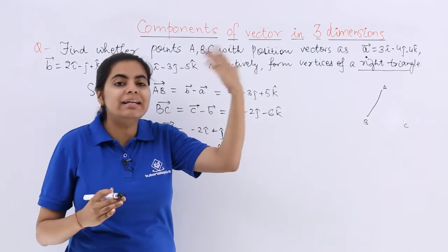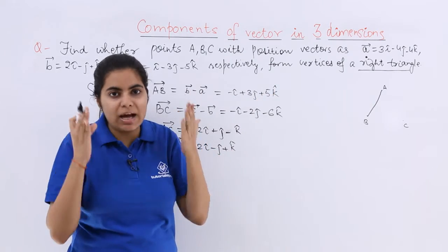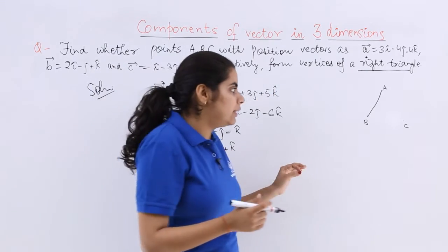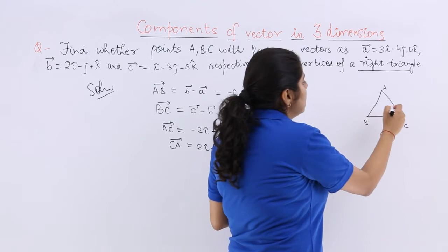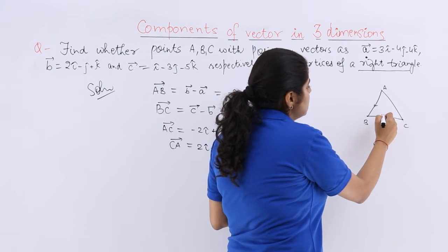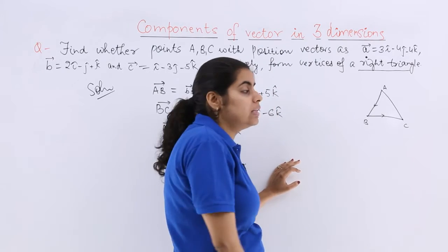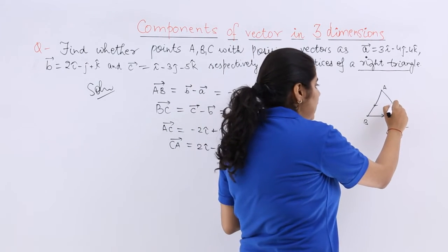Now if I talk about right triangle, first at least these sides have to form a triangle then only they will form a right triangle later on but first they have to form a triangle. Now a triangle means that when it is joined I should have a scenario like if AB, BC is taken into consideration then the resultant is AC.